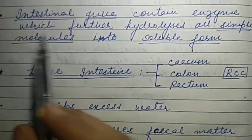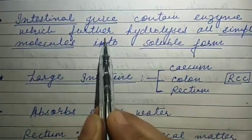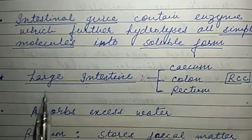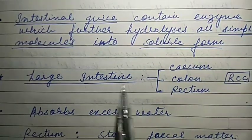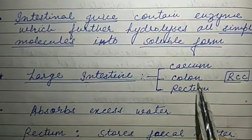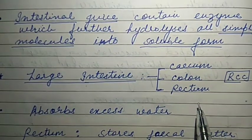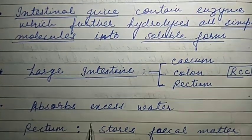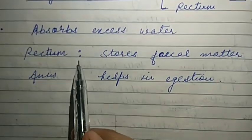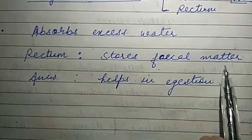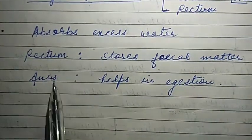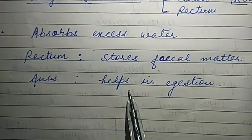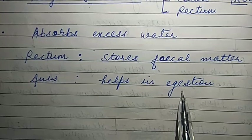The large intestine consists of three parts: cecum, colon, and rectum. The main function of the large intestine is to absorb excess water. The rectum stores fecal matter, and through the anus — a small opening — the waste food particles come out from the body. This process is known as egestion.